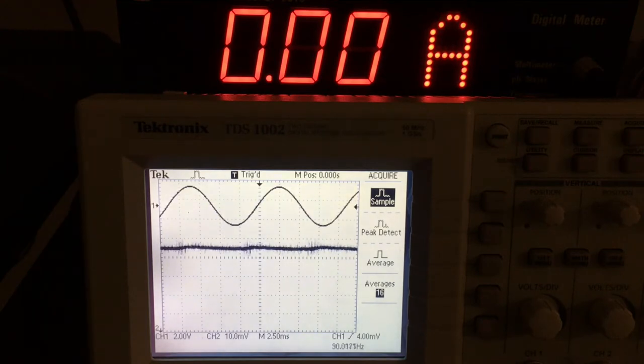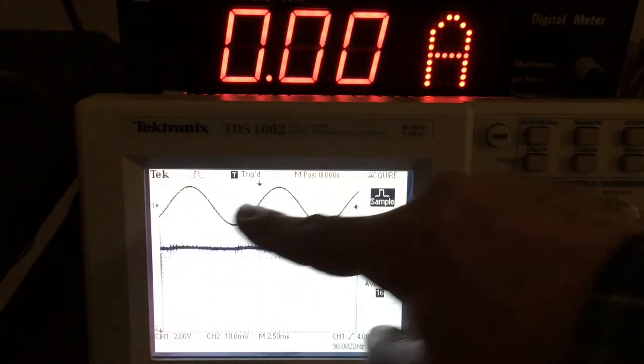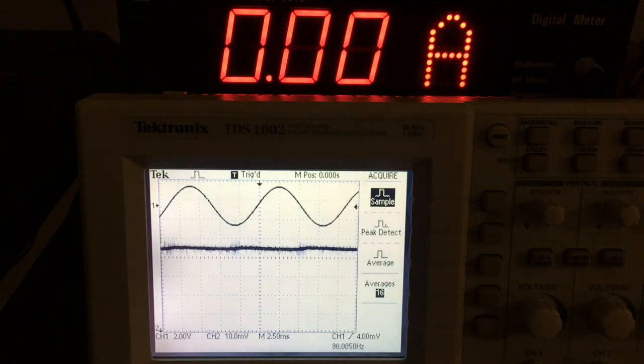I've also, instead of driving the solenoid with a DC field, I'm now driving it with an alternating magnetic field. That's the upper trace on the screen. We can see I'm driving it at about 90 hertz.